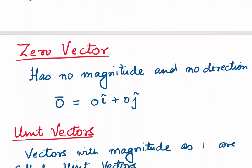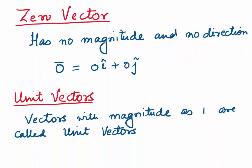Now, what is a zero vector? A zero vector is a vector which has no magnitude and no direction, and it is written as 0i plus 0j, where 0 and 0 are both the scalar components.